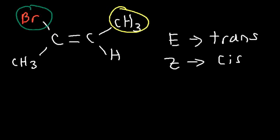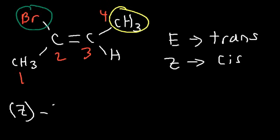Now what about naming this particular molecule? Let's identify the longest chain: 1, 2, 3, 4. We count from left to right so that the bromine atom is on carbon 2 instead of carbon 3. Bromine has a higher atomic number than carbon, so bromine has higher priority. Between methyl and hydrogen, methyl wins because carbon has a higher atomic number than hydrogen. The two highest-priority groups are on the same side, so this is the Z isomer. This is going to be called Z-2-bromo-2-butene.